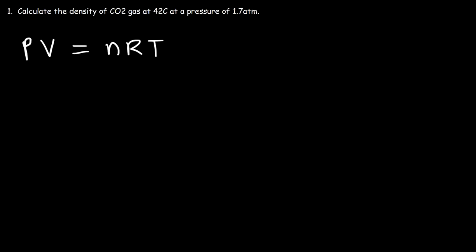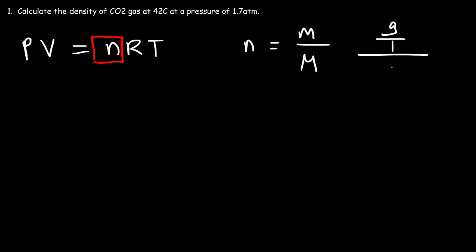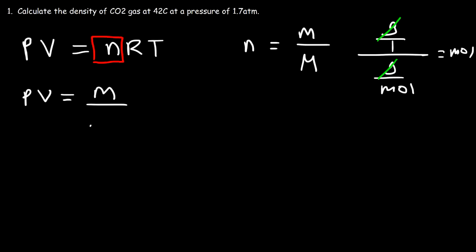Now what we need to do is replace n with something. n is the number of moles, and that's equal to the mass divided by the molar mass. The mass is in grams, and the molar mass is grams per mole. So when you divide grams by grams per mole, the unit grams will cancel, giving you the unit moles. So I'm going to replace n with the mass divided by the molar mass.